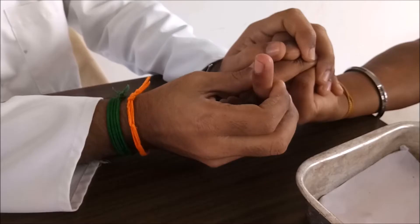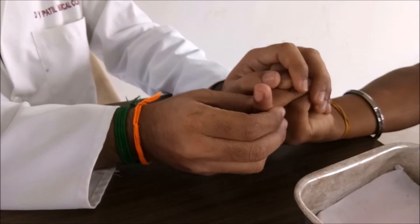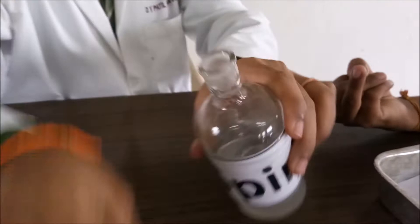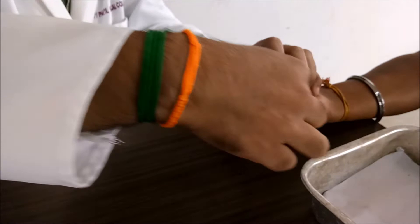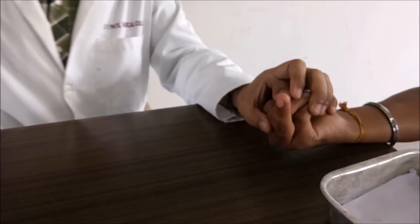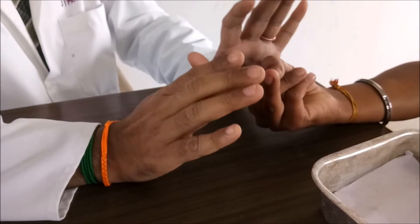Now you have to do gentle massage. Don't do vigorously. Gently, you just warm the particular finger like this. Once you have done it, take the spirit cotton. Wipe towards upward movement like this. Once you have wiped, don't forget to discard this cotton swab to the dustbin. And you should not blow this. Just wait. It is automatically get dried up.